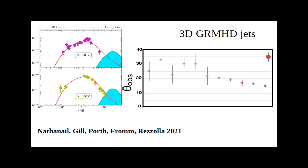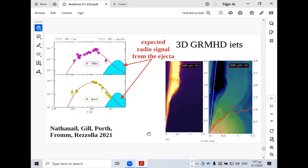For GW170817, the black hole mass is approximately 2.8 solar masses from the gravitational wave analysis, with a disk mass of 0.4 or less solar masses. The session concludes with thanks to the speaker, noting the next seminar will be the following Tuesday.